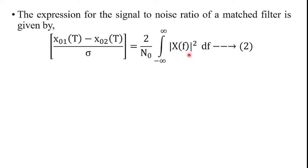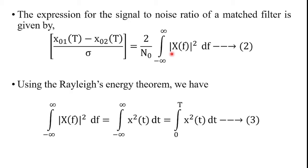Using Rayleigh's energy theorem, we know that ∫_{−∞}^{∞} |X(f)|² df = ∫_{−∞}^{∞} x²(t) dt = ∫_0^T x²(t) dt. The limits of integration are 0 to capital T because x(t) is present only over one bit interval capital T.